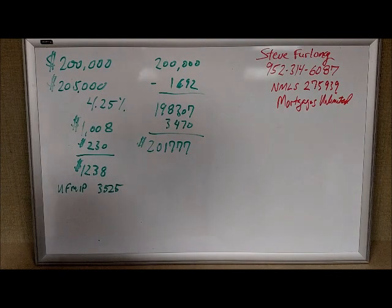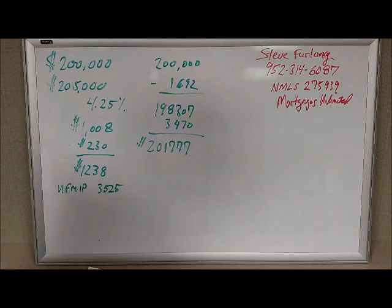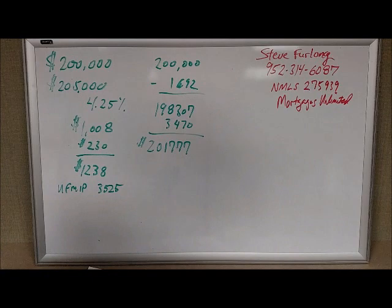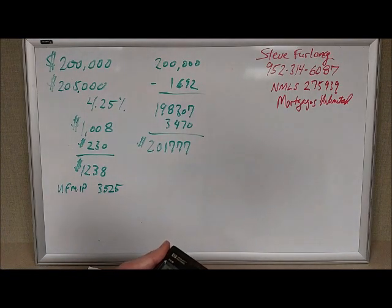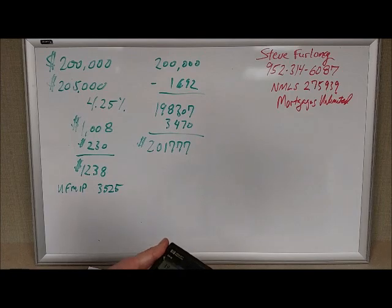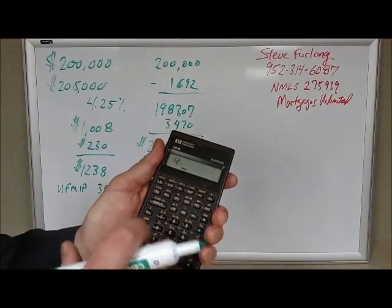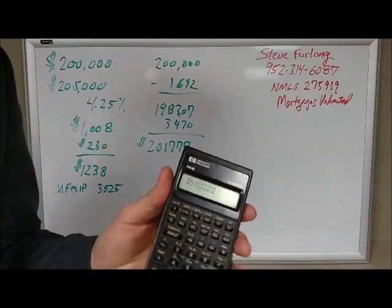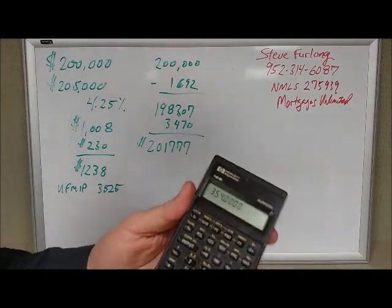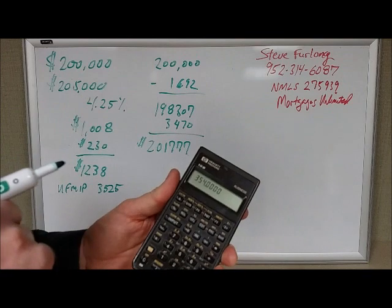Now FHA says when you do a streamline, you can do the maximum of 30 years or the remaining term of your loan plus 12 months. And so if you're a year and a half in, that means you have 28 and a half years left. And 28 and a half times 12 is 342 months. And we can add 12 to that for a maximum amortization term of 354 months. So let's plug that in as a term.